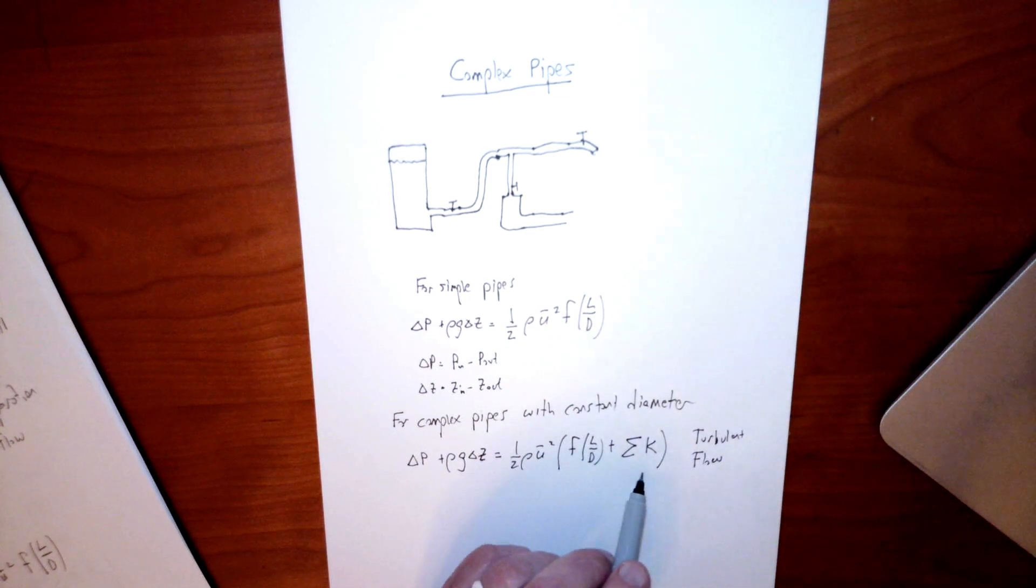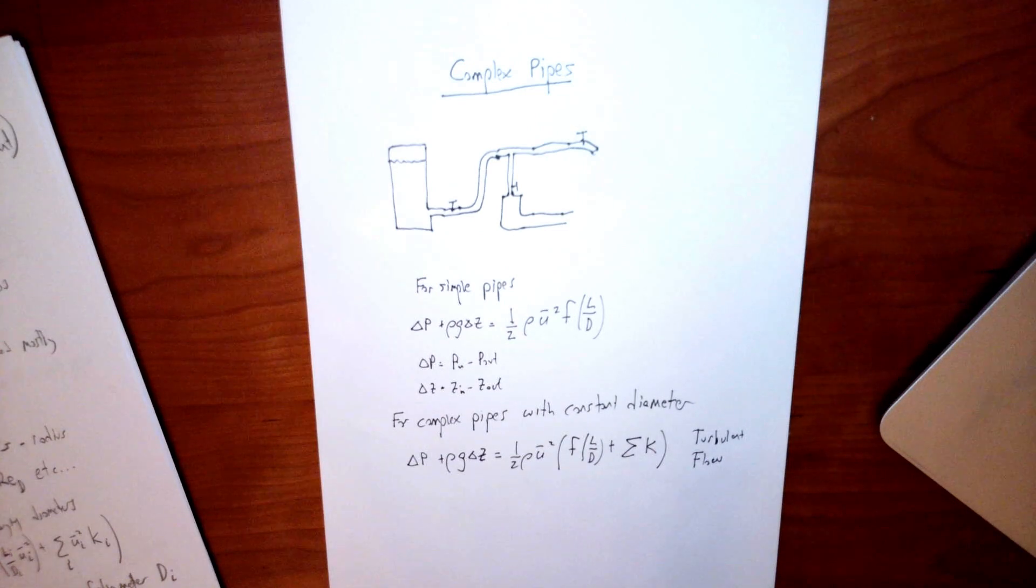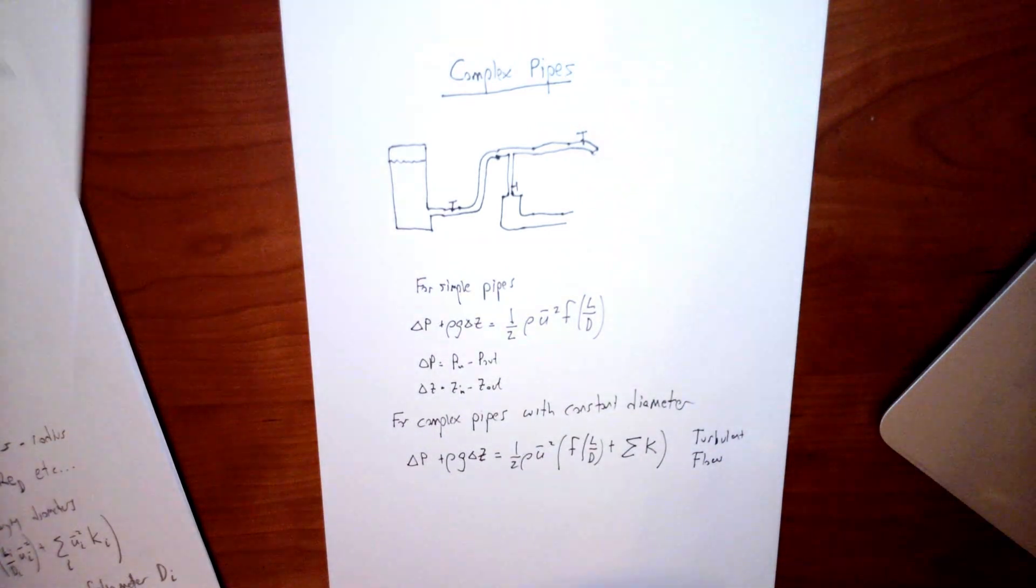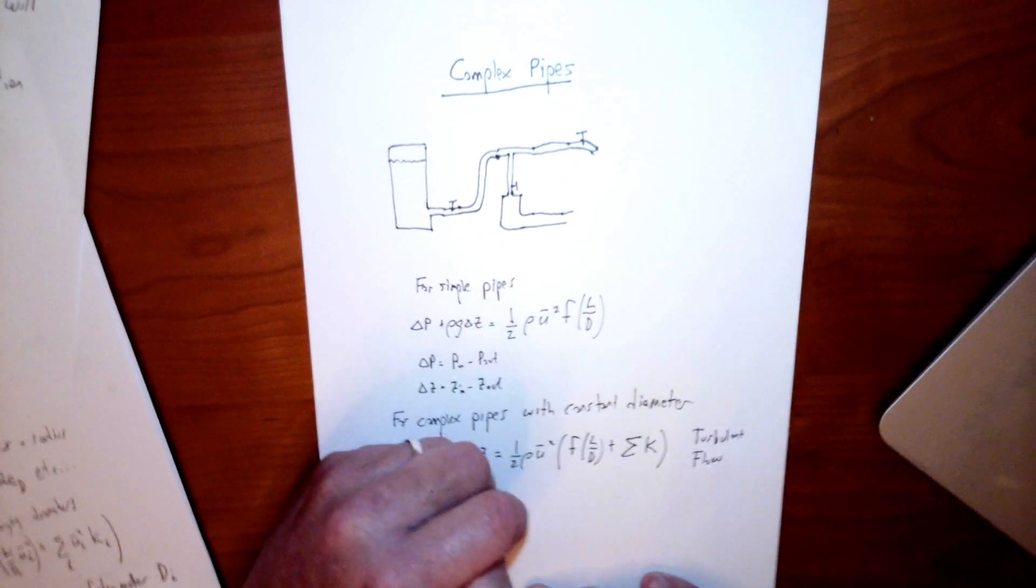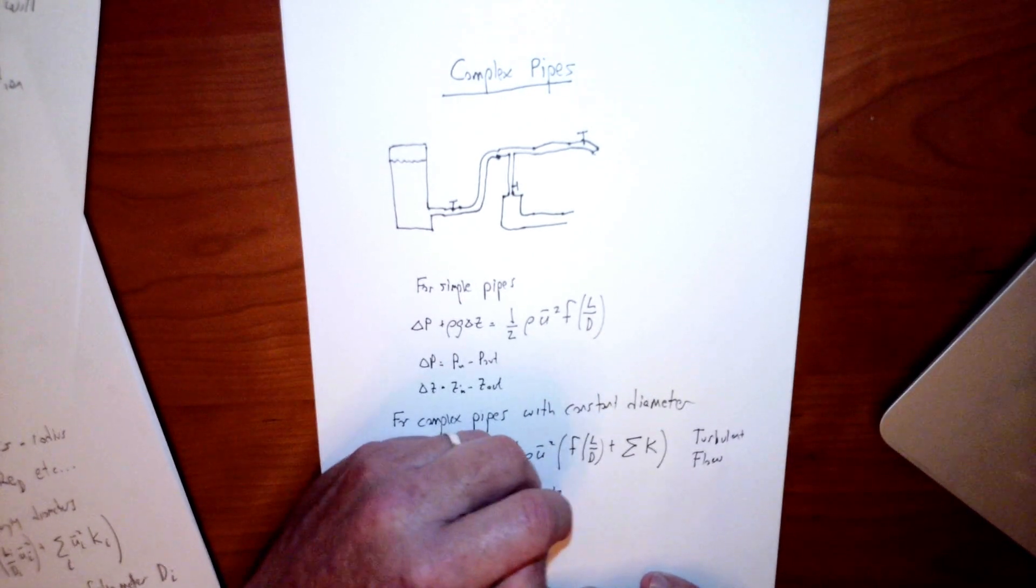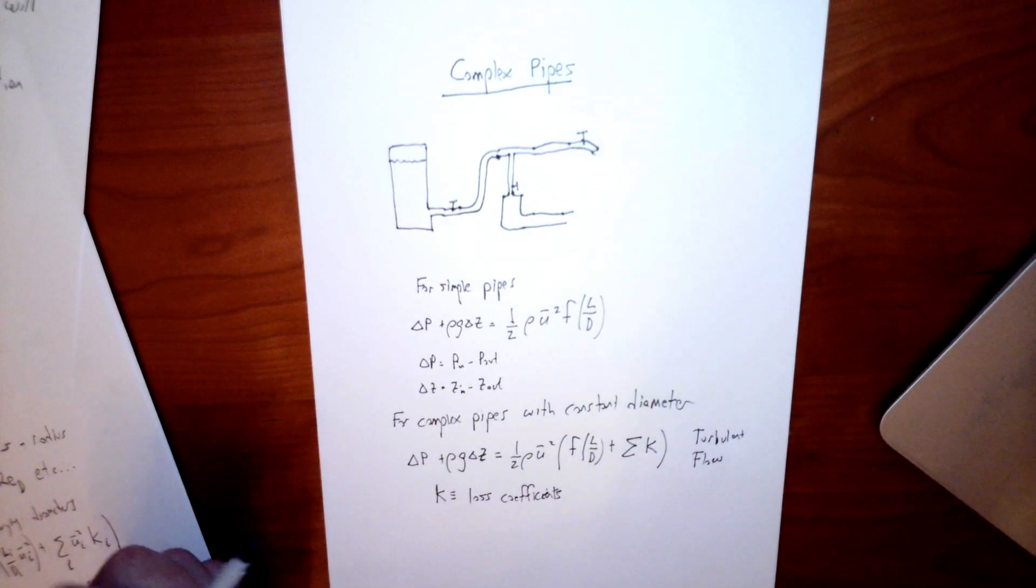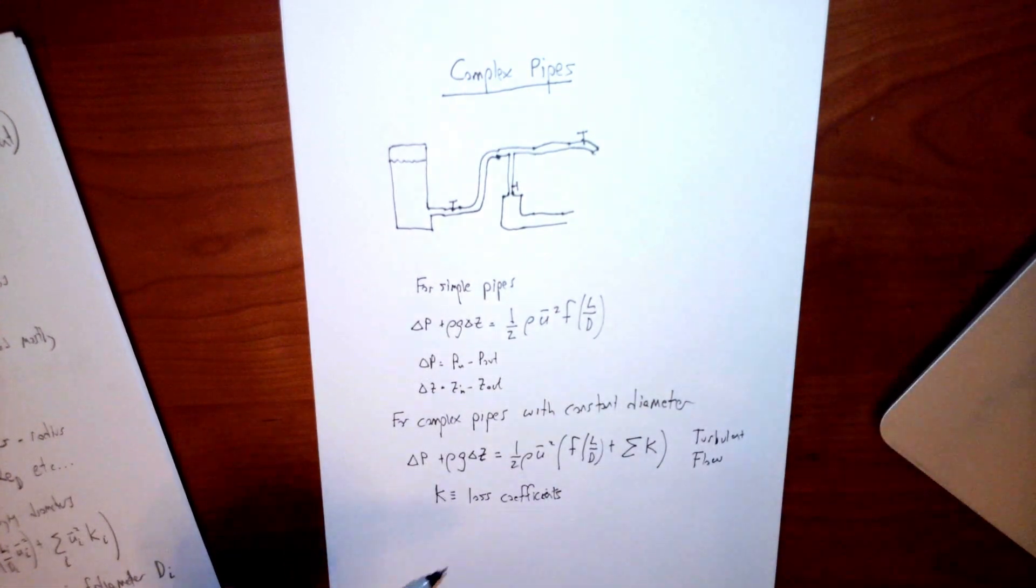So these K's are called loss coefficients. And there are different loss coefficients for every single kind of thing that exists in the pipe, like bends in the pipes, the valves, all of those things. These K's are for turbulent flow. So right now we're talking about flow that we think is turbulent. Most of the K's that you're gonna find are for turbulent flow. And this relationship that I've written is for turbulent flow.